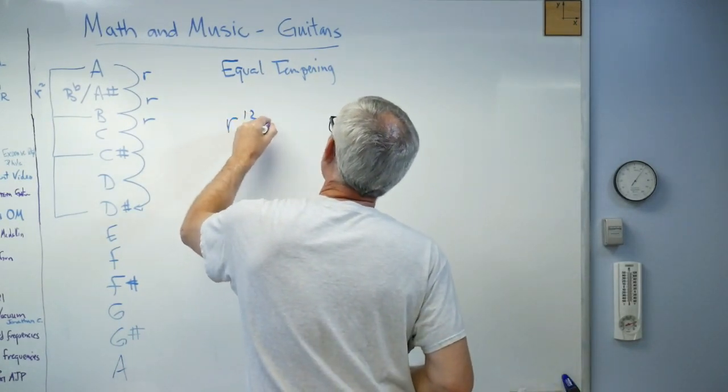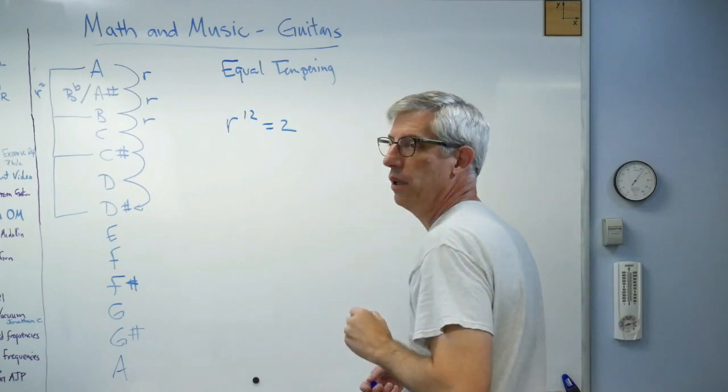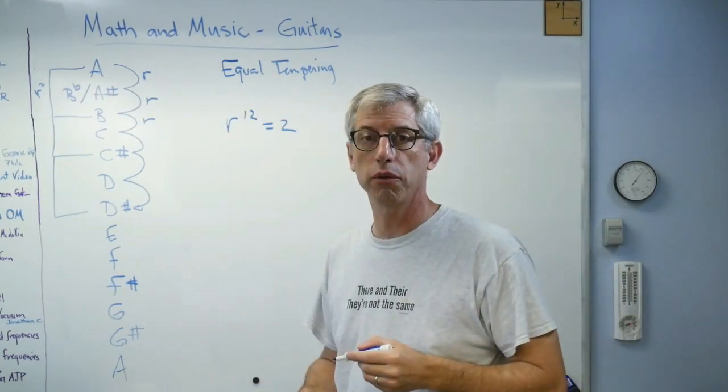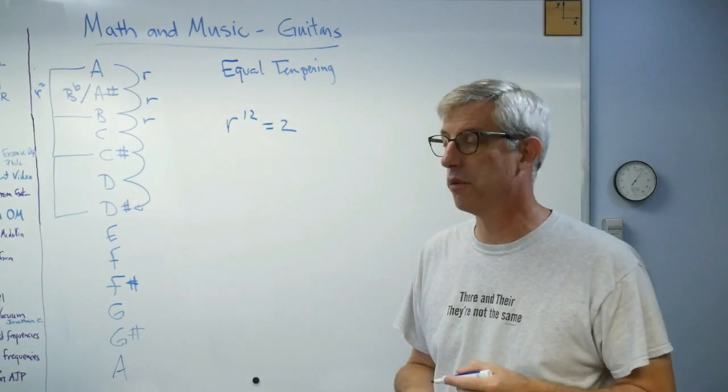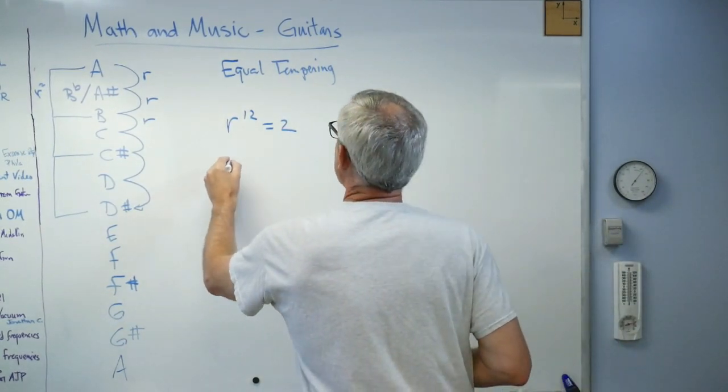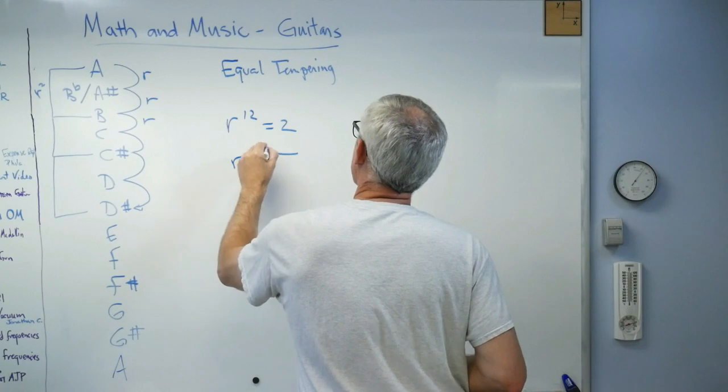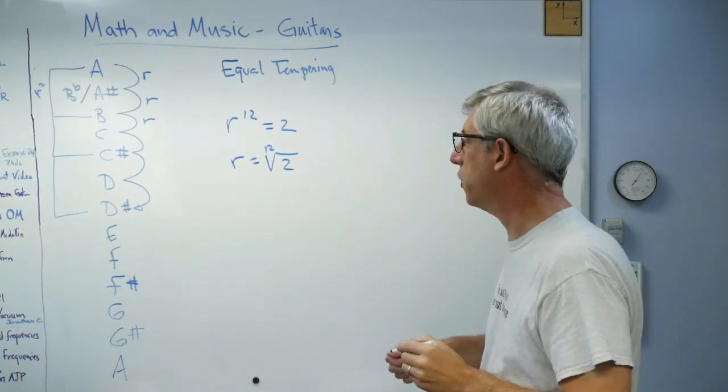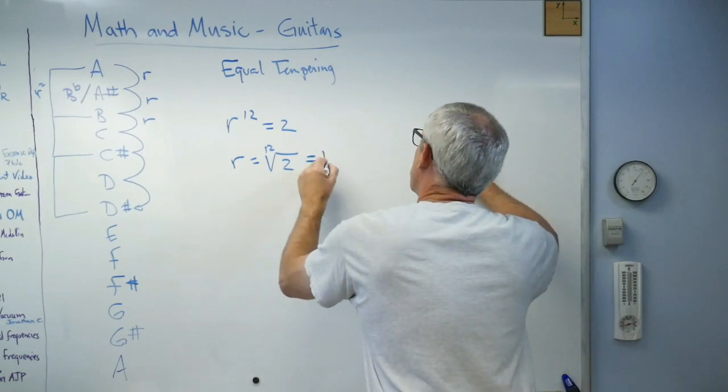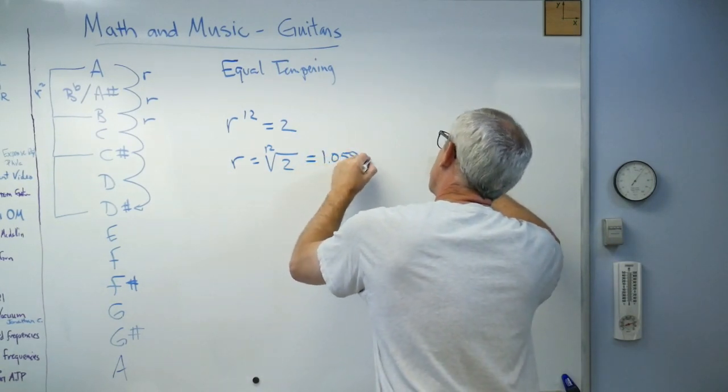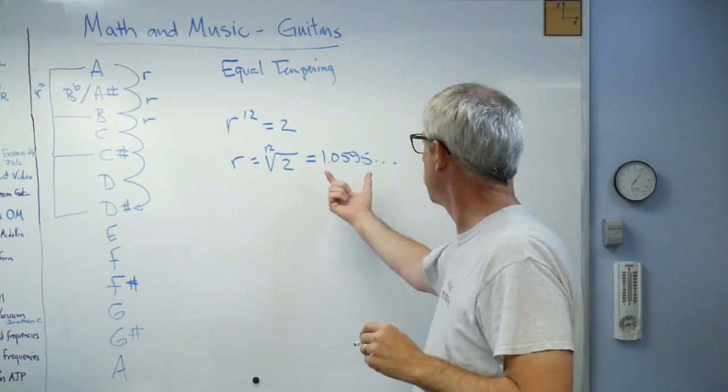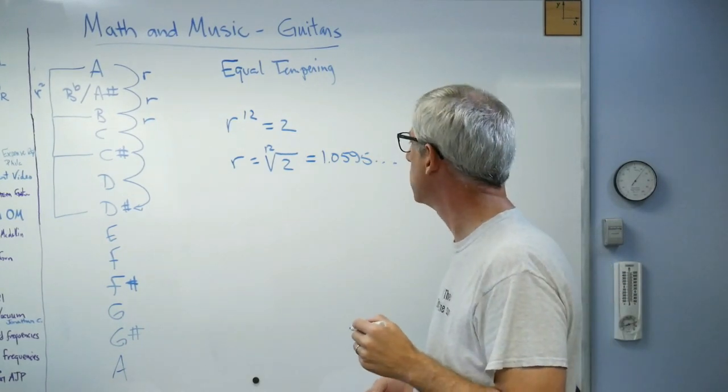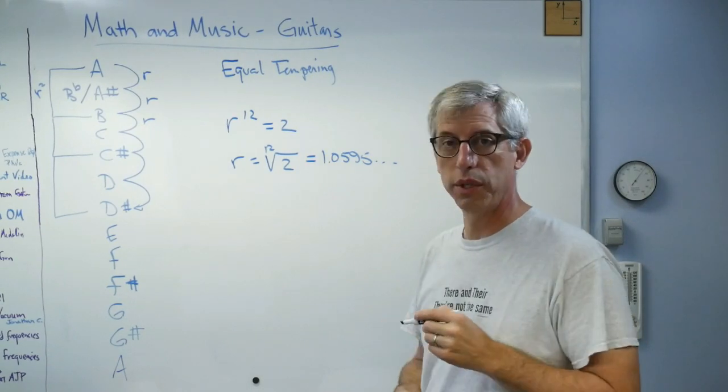So, R to the 12th has to equal 2. It has to, because to go from here to here is a doubling of frequency. An octave is a doubling of frequency. Well, that means R has to equal the 12th root of 2. It's one of the strangest numbers you'll ever use routinely. And it's 1.0595 something. That's enough, pretty much. You don't need more than that for most purposes. So, this is equal-tempering.